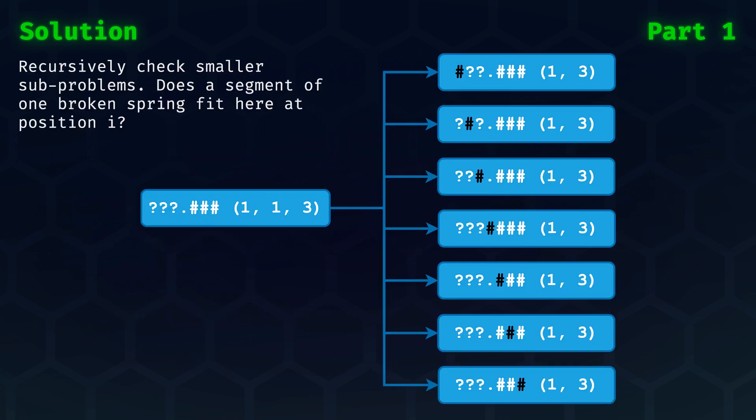Then, the meat and potatoes of today's part one. We do the brute force recursively, meaning that we keep solving smaller and smaller sub-problems, until a problem is so small that the answer is trivial. The sub-problem that I've chosen to solve is to see if given a record and a set of groups, it is possible to place the first group such that its last element is at position I.